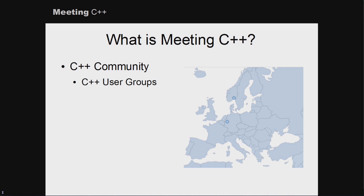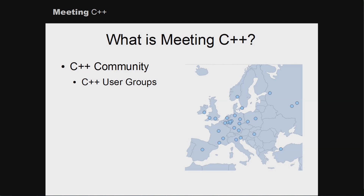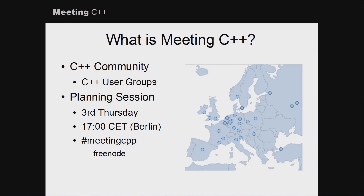The community is about the C++ user groups. In 2011 when I started, there was already an active user group in Oslo and my own user group in Düsseldorf, which has been active since December 2011. This is the current map of active user groups I know of in 2015. For new user groups, and also if you already have an existing user group, there is a planning session once a month on the third Thursday at 17:00 CET — that's Berlin time.